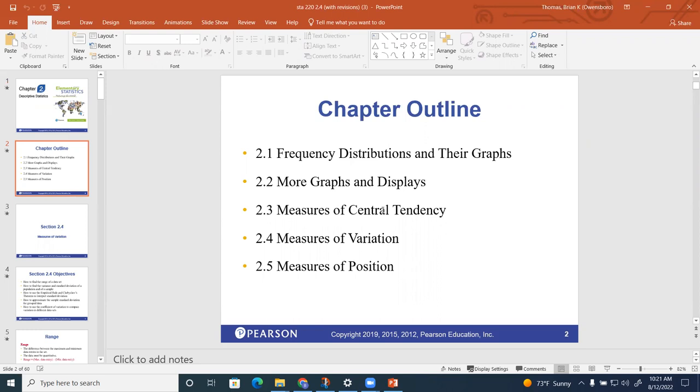Mean, median, and mode are the main ones, but we spent a lot of time on the mean—especially weighted means and the frequency distribution means. So 2.4 is going to be about variation. Variation, like we see this word vary, how things may differ, how things may vary.